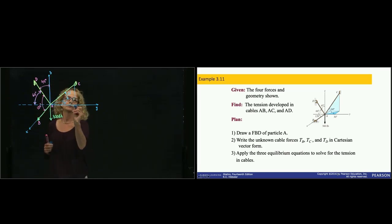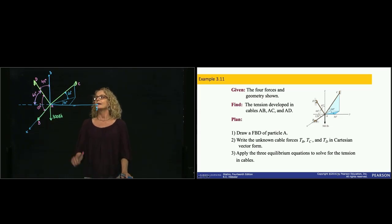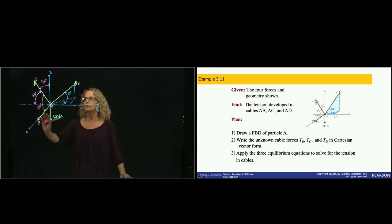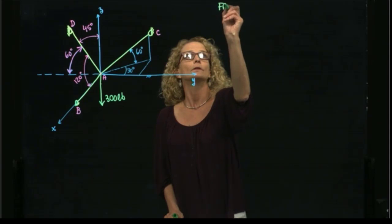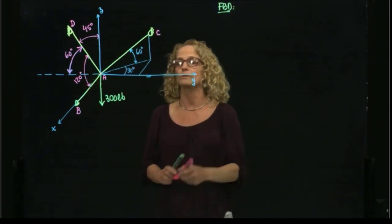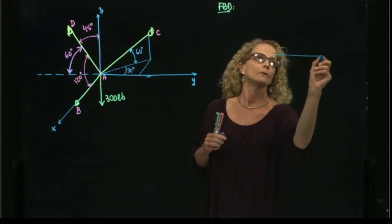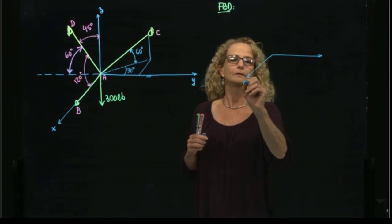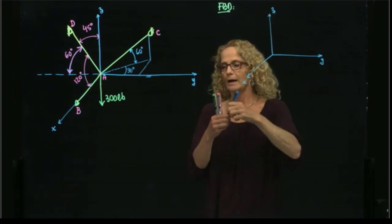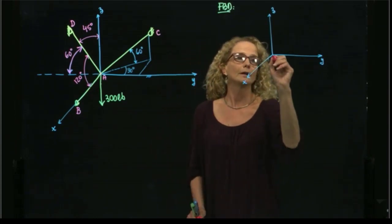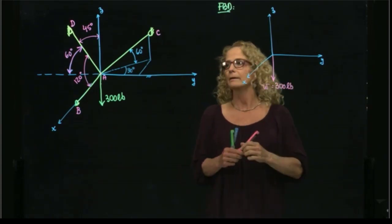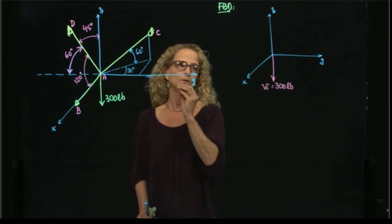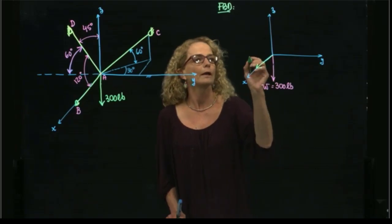This is an inertia so it doesn't move — it's fixed. We have the information of these three chords in space and they want us to find the values of the tension of these chords. Particle A is subjected to 300 pounds, and we have three chords that sustain that point in equilibrium in 3D. If we do the free body diagram of this system, we will have something very similar to this drawing.